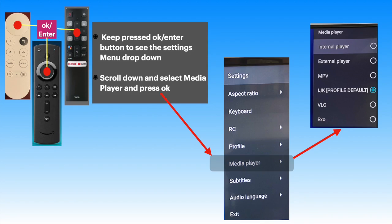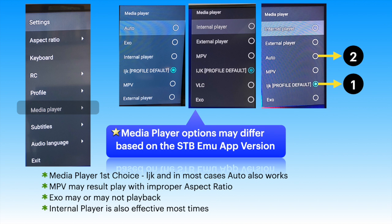To get the media player options, press the OK or Enter button on your remote and release quickly once the settings menu drop-down shows up. Scroll down to media player and open it. Depending on the STBMU version used, the listing of media players will look different.